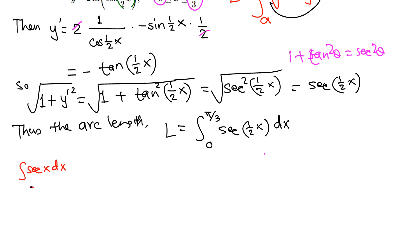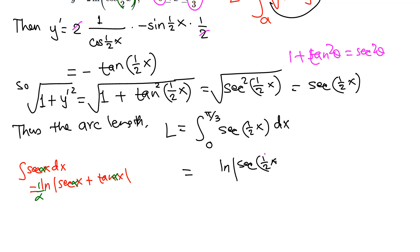The antiderivative of secant is not trivial — it's ln|sec + tan|. If we have angle α inside, we use u-substitution, which means we divide by the coefficient outside, giving 1/α in front. Applying this formula with angle x/2, we get ln|sec(x/2) + tan(x/2)|, divided by 1/2, which gives a factor of 2 outside. Evaluated from 0 to π/3.